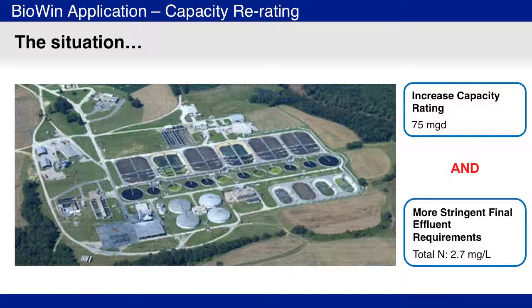The goal of this project was to explore options for increasing the rated capacity of the plant from 60 million gallons per day to 75 million gallons per day, and to achieve a required effluent total nitrogen of 2.7 mg per litre in order to comply with the permitted annual mass loading.